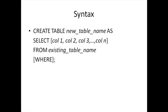After SELECT, you mention the columns you want to pull from the existing table, then the keyword FROM, and finally the name of the table from which you want the columns to be pulled. Whatever you see in square brackets is optional. If you want all columns pulled from the existing table — although that just duplicates the table — you don't specify any column after SELECT. The WHERE clause at the end is also optional, and we'll talk about that later in this course.